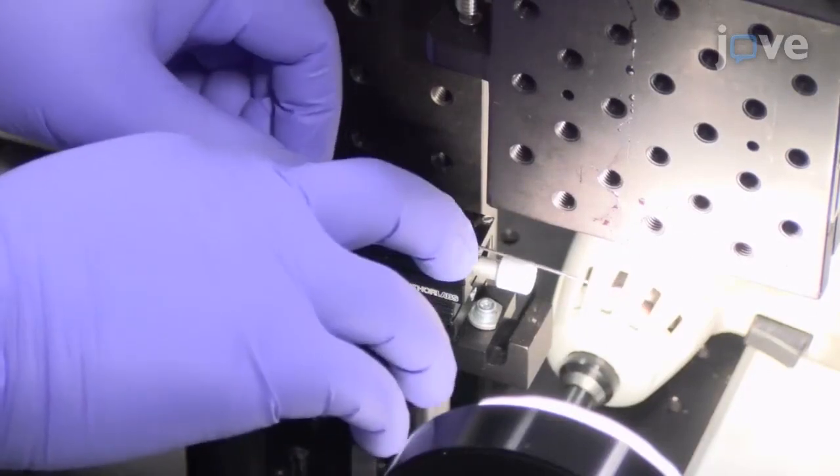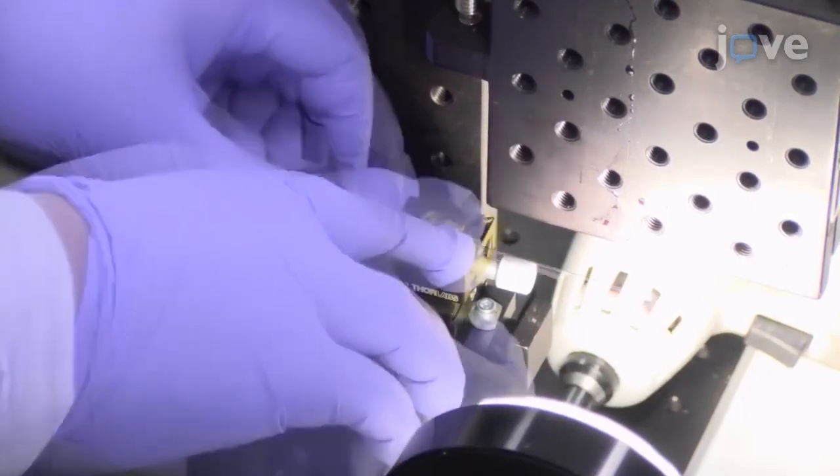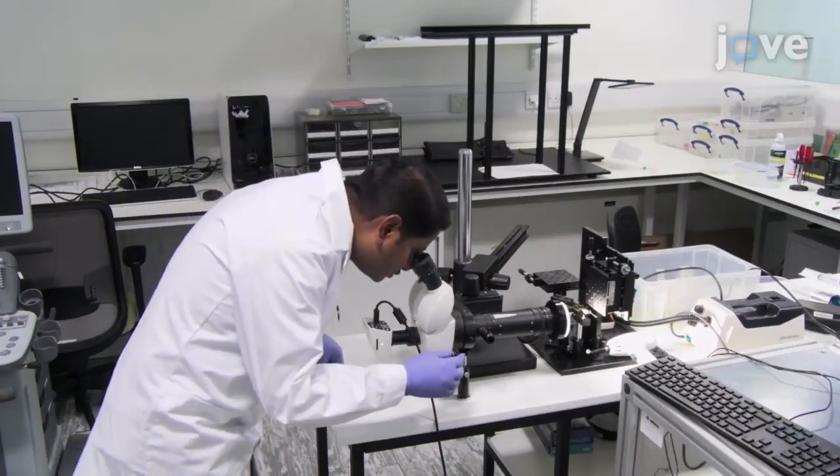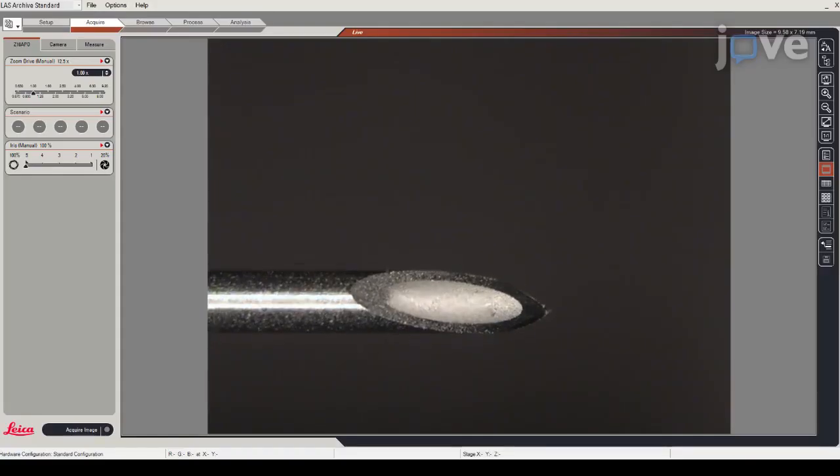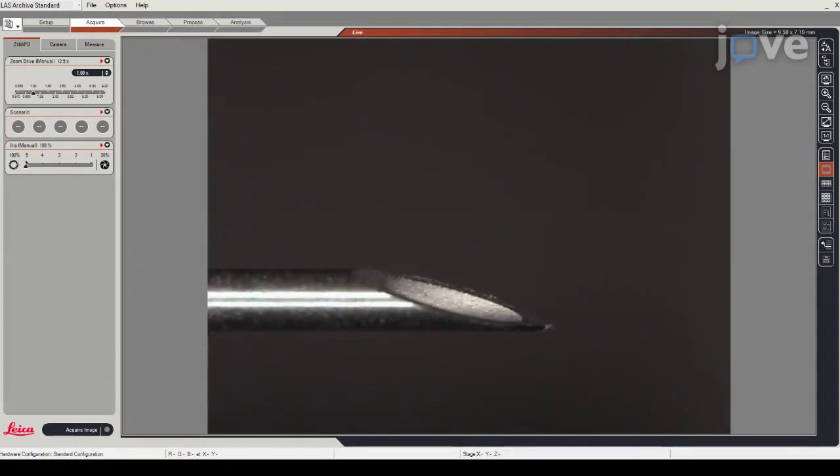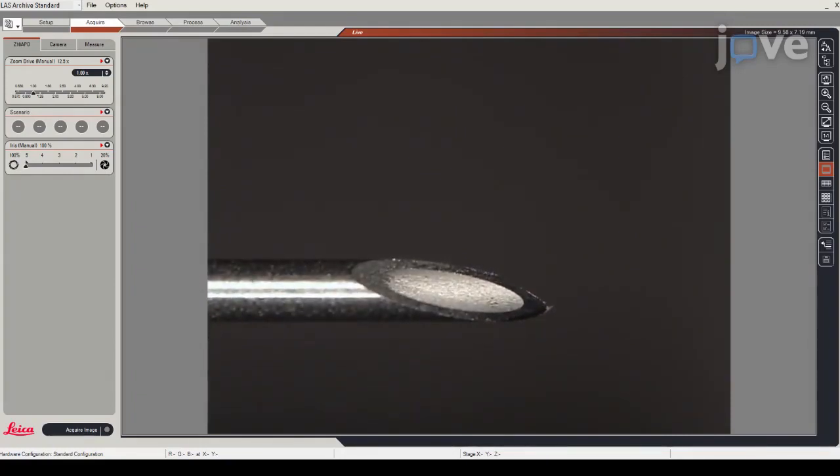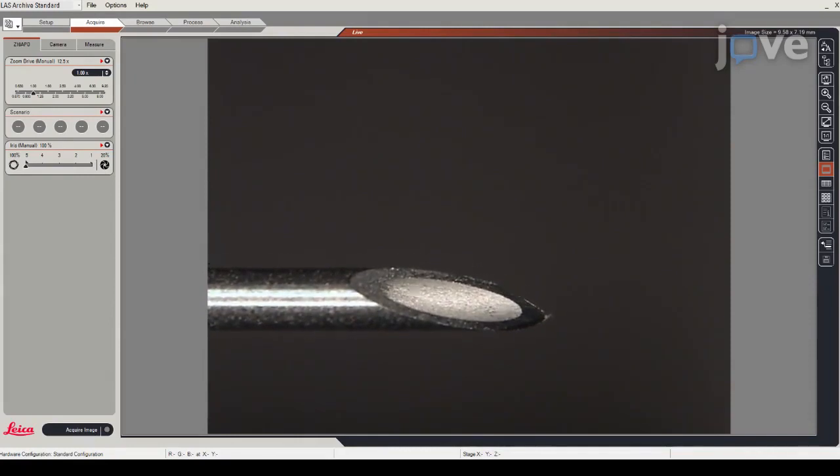Next, affix a medical needle horizontally to a manual horizontal translation stage and use a stereo microscope to visualize the needle tip with the optical axis of the microscope aligned horizontally and perpendicular to the needle, rotating the needle about its axis as necessary until the bevel can be observed.